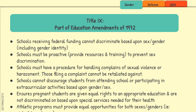Athletic programs must provide equal opportunities for both sexes and genders. It doesn't mean that having a male football team requires a female football team — it means equal money, resources, energy, and advertising must be spent. A football team for guys and a softball team for girls is fine as long as equal funding and resources are provided. Title IX mainly covers sexual violence and harassment, but also includes pregnancy and non-discrimination based on gender.